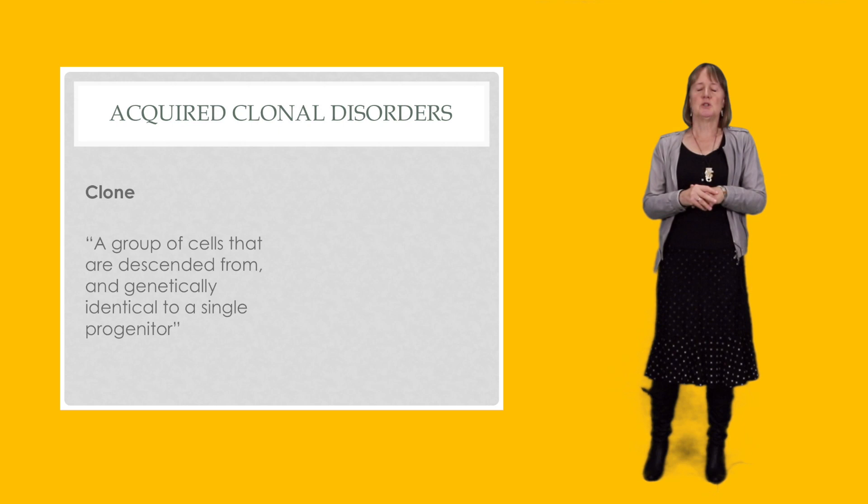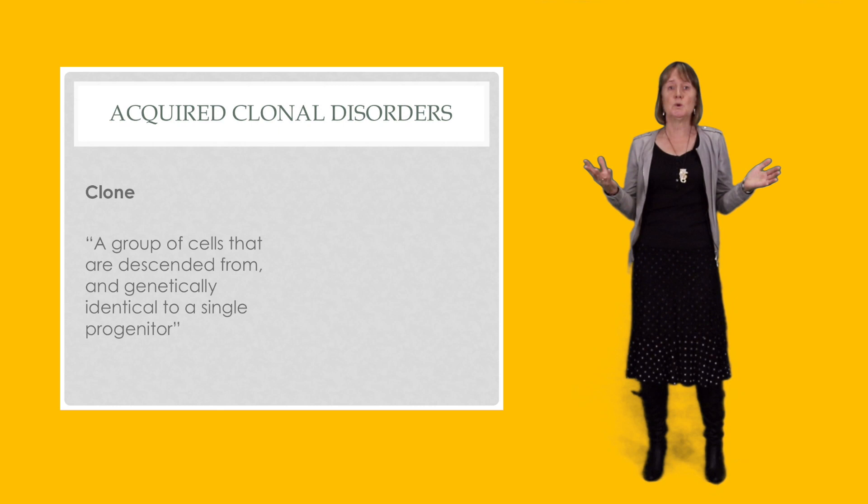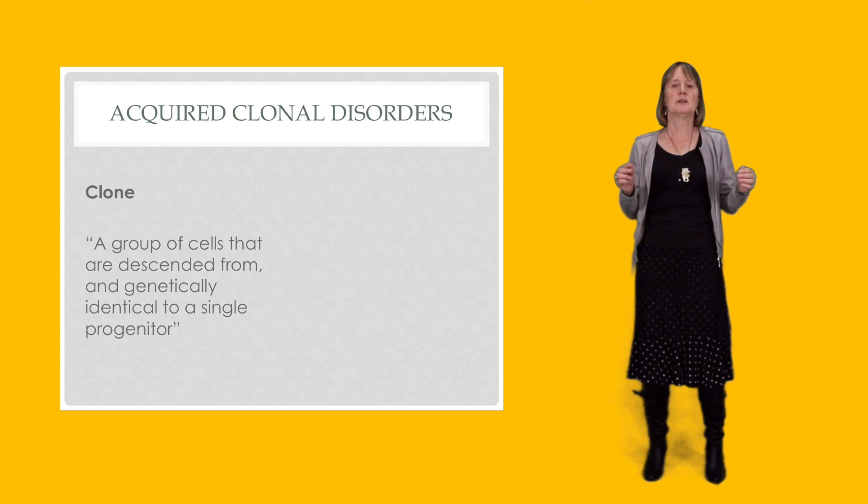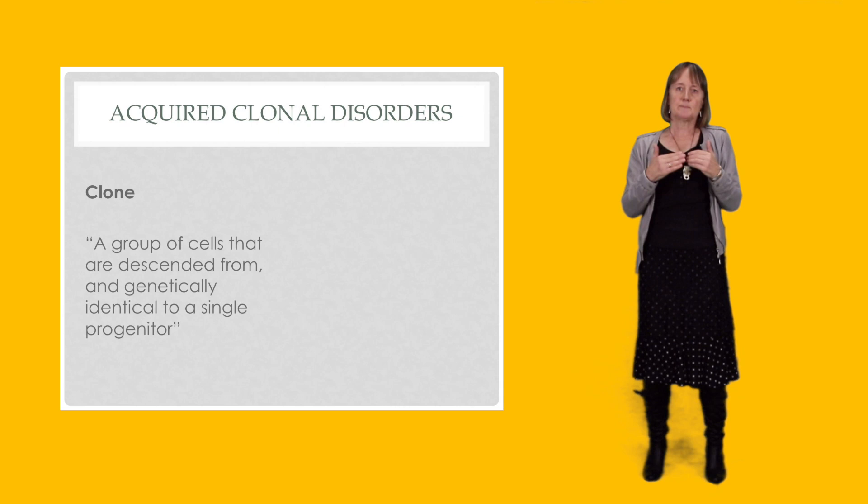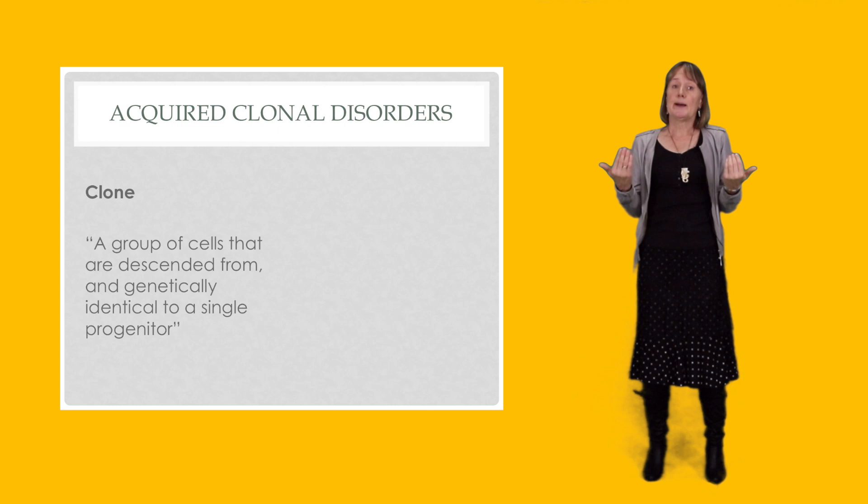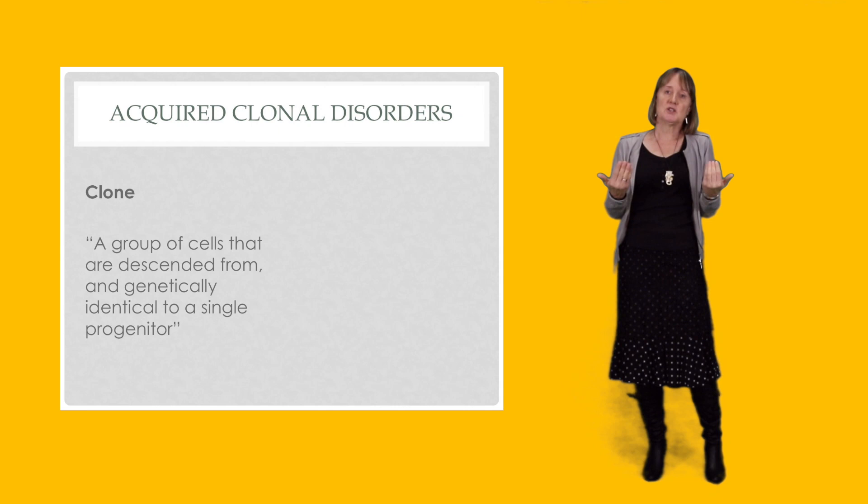And clonality is not abnormal in the sense that our normal blood forming process produces clones of normal cells. It's just that these clones are very small and there are huge numbers of them, so it doesn't look like there's a predominance of any one clone. But when we look at the malignancies, we see an expansion of a clone and we see that it is abnormal.